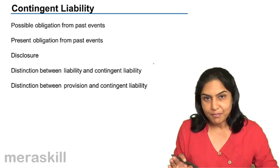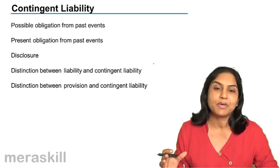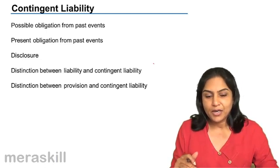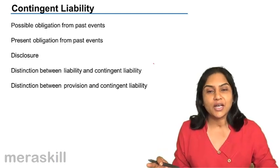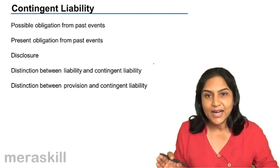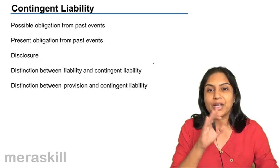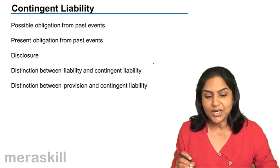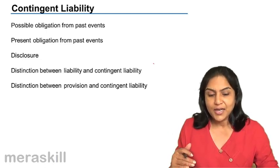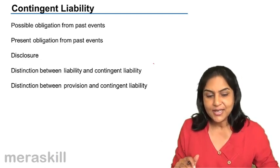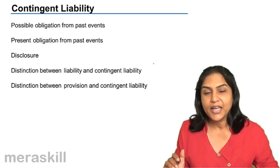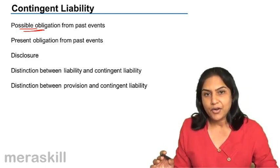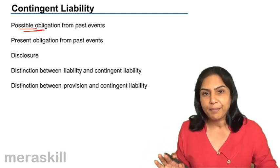Let us take the example of a litigation. If a customer has filed some case against us, but we do not expect to have to pay any compensation — we think it is a remote possibility, very unlikely that we would have to compensate — we do not therefore recognize such a liability. But it is possible that there is some small chance that we do lose the case, and the decision goes against us, so we may have to meet the liability in future. It is a very unlikely obligation which might or might not arise depending on the happening or non-happening of some future event.